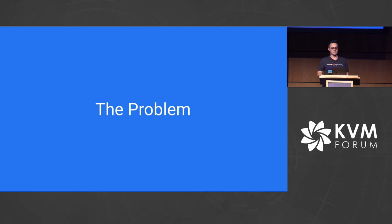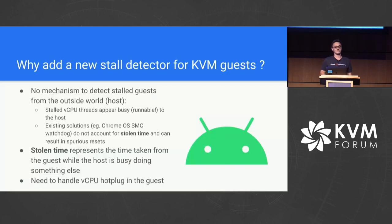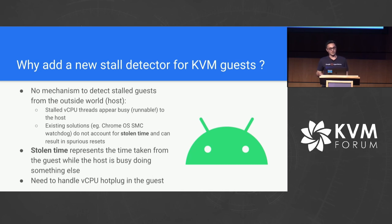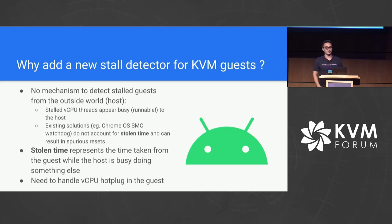Let me briefly discuss the problem that we were facing. Why add a new stall detector for KVM guests? It turns out that previously, there was no mechanism to detect stalled guests from the outside world. This means that in our case, VCPU threads appeared as runnable, but no code path was running through them. We didn't know in which state our guest was. If you take a look at existing solutions like the Chrome OS SMC watchdog, this doesn't account for stolen time, and in our case it can result in spurious resets.